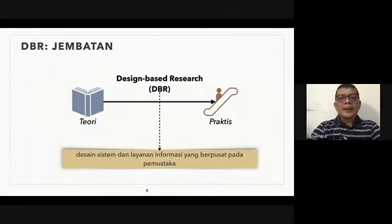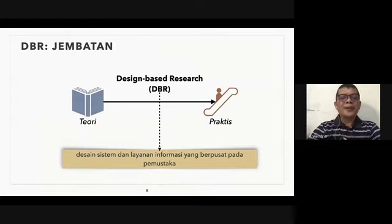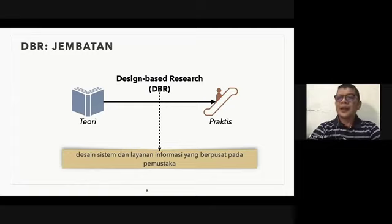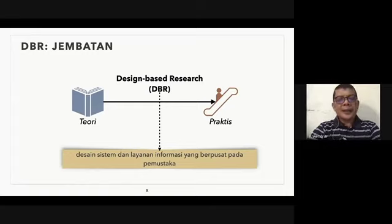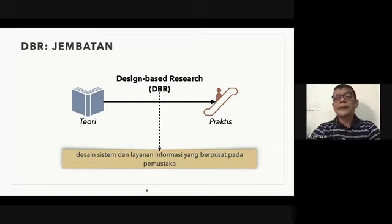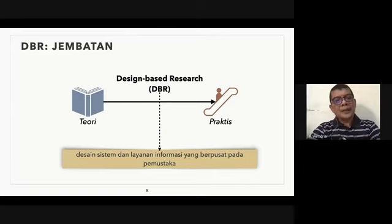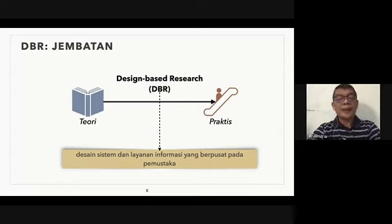Ini teori dan praktiknya—bagaimana menerapkan teori. Ketika kita bicara, ada berbagai macam teori di perpustakaan, ada teori dari ASK, yang dari Belkin, Anomalous States of Knowledge. Kemudian bagaimana teori-teori lain dan bagaimana menerapkannya di perpustakaan, termasuk teori yang berkaitan dengan bahan rujukan. Dan bagaimana praktisnya di perpustakaan, menerapkannya di perpustakaan.